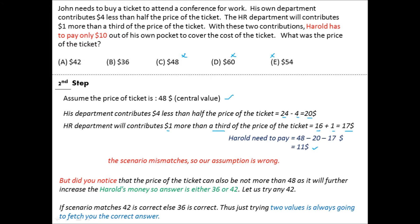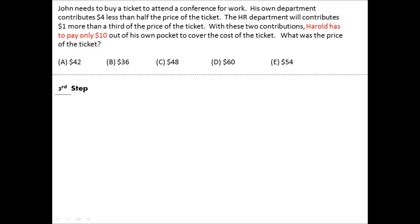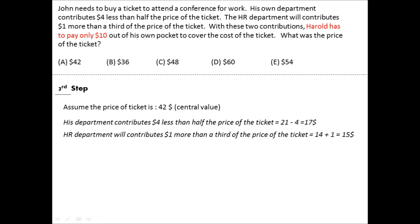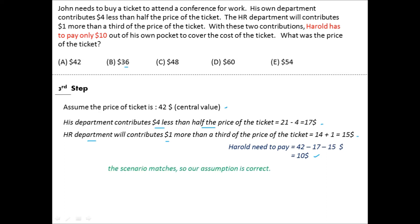Since 48 gave us one dollar too many, the answer should be slightly less — likely 42. Let's verify: ticket = 42. His department: 21 − 4 = 17. HR: 14 + 1 = 15. Total contribution = 32. John pays 42 − 32 = 10. That matches! The answer is A (42). In just two applications of back solving, we have our answer. Even in the worst case, only two values need to be checked.